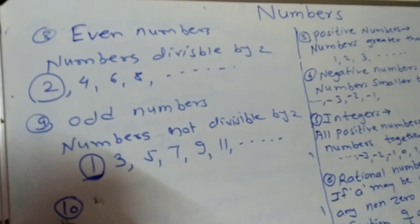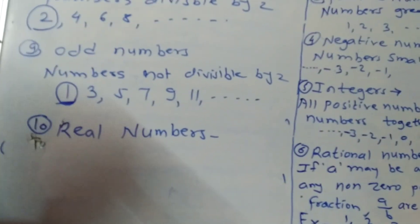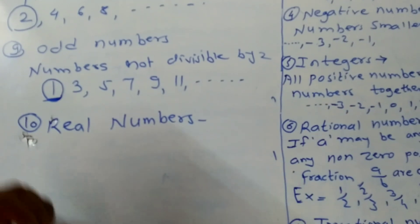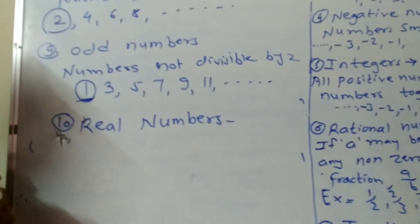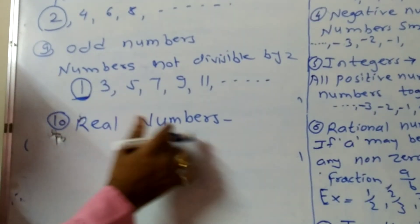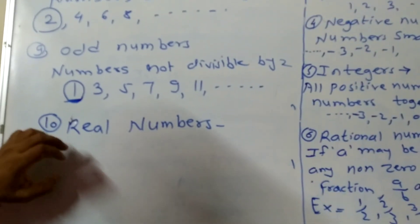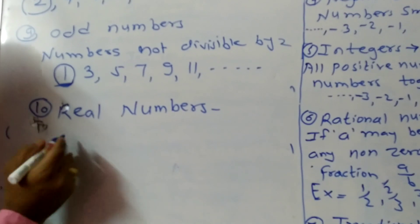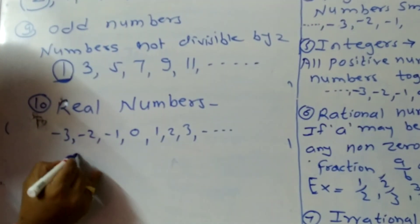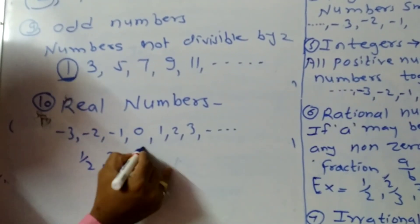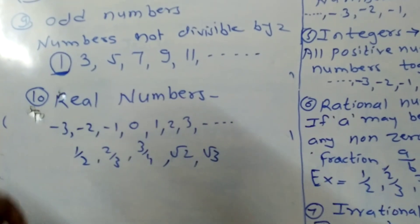The next type is real numbers. All the whole numbers, all the positive numbers, all the negative numbers, all the rational numbers, and all the irrational numbers together are called real numbers. For example: ..., minus 3, minus 2, minus 1, 0, 1, 2, 3, ..., and rational numbers like 2/3, 1/2, 3/4, and irrational numbers like root 2, root 3 — this entire set is called real numbers.